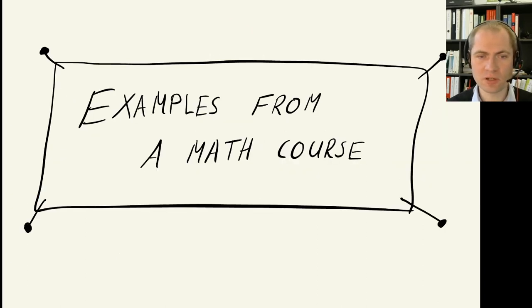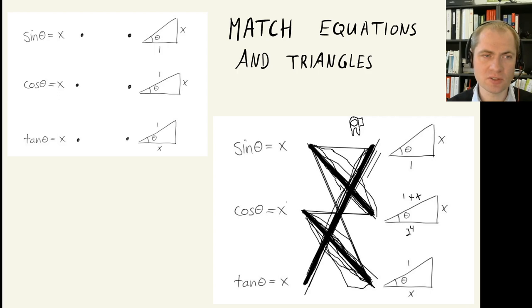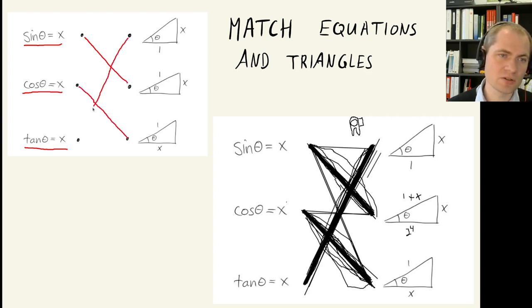Let's look into a few examples from a math course where this has been utilized. The first example is to look at these trigonometric equations: sine of theta equals x, cosine of theta equals x, tangent of theta equals x, and so on. These expressions should be matched with a suitable triangle, the three triangles that I have shown over here. I don't want to discuss that much trigonometry, but the correct matching will be this.